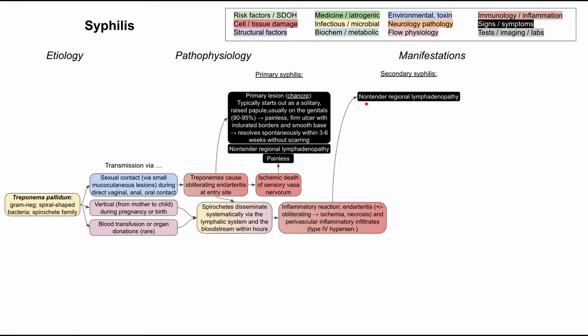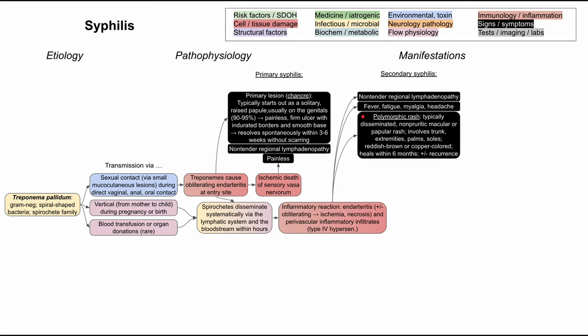Secondary syphilis can have non-tender regional lymphadenopathy, and it can also have fever, fatigue, myalgias, and headaches — that's just standard infectious symptoms. The first more unique symptom is the polymorphic rash. This typically starts as a disseminated, non-pruritic macular or papular rash involving the trunk, the extremities, the palms, and the soles. It's typically reddish-brown or copper colored, and it heals within six months. It's possible that this rash goes away and comes back.